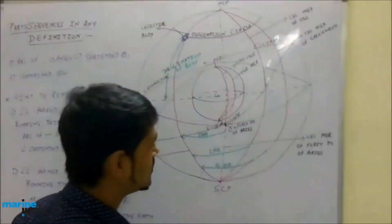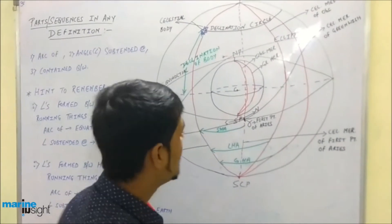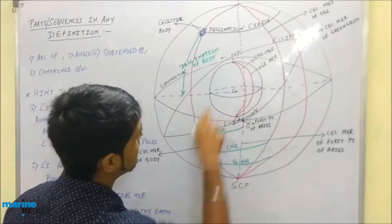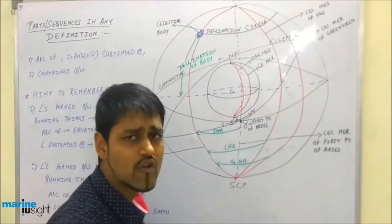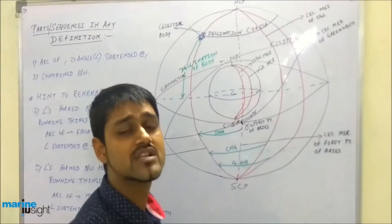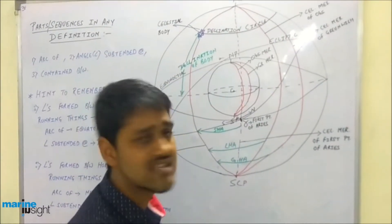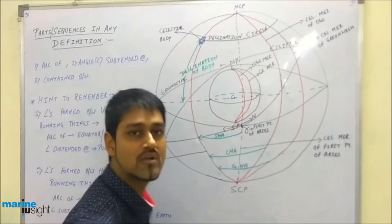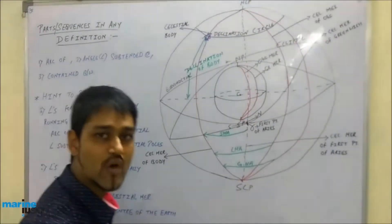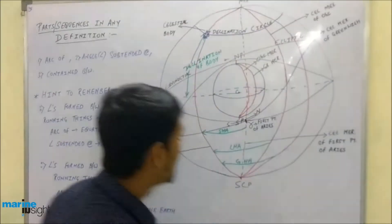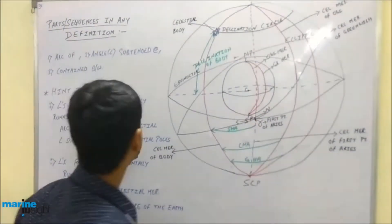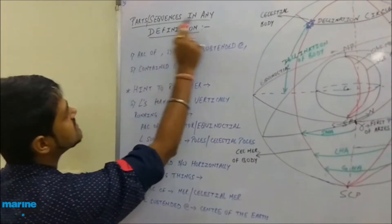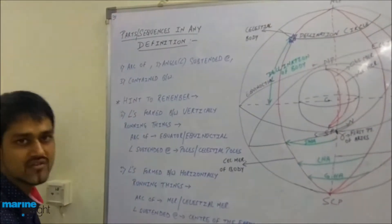Before going further, I want to cover how to define these different things which I have written in green — declination, SHA, LHA, GHA — definitions we use on a day-to-day basis, especially in sight taking and sight calculations. A lot of times we tend to forget their actual meaning, so remembering them easily is the basic topic today. On the left-hand side of the board, I have written the parts and sequences to define anything.